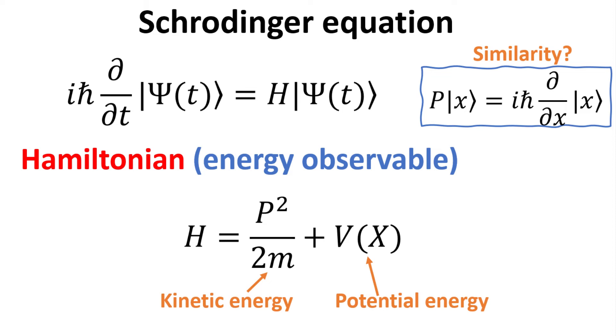Now, the Hamiltonian can also be explicitly written as a function of x and p, where the first term, p²/2m, is the kinetic part, where m is the electron mass. The second term is the potential energy of the system, which typically is a function of position.